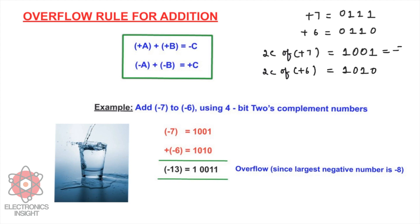So 1001 represents −7 and 1010 represents −6. We add both of them in a 4-bit register. Adding bit by bit: 1+0=1, 0+1=1, 0+0=0, 1+1=0 with a carry of 1. This carry bit exceeds the 4-bit capacity of the register — that is called an overflow condition.